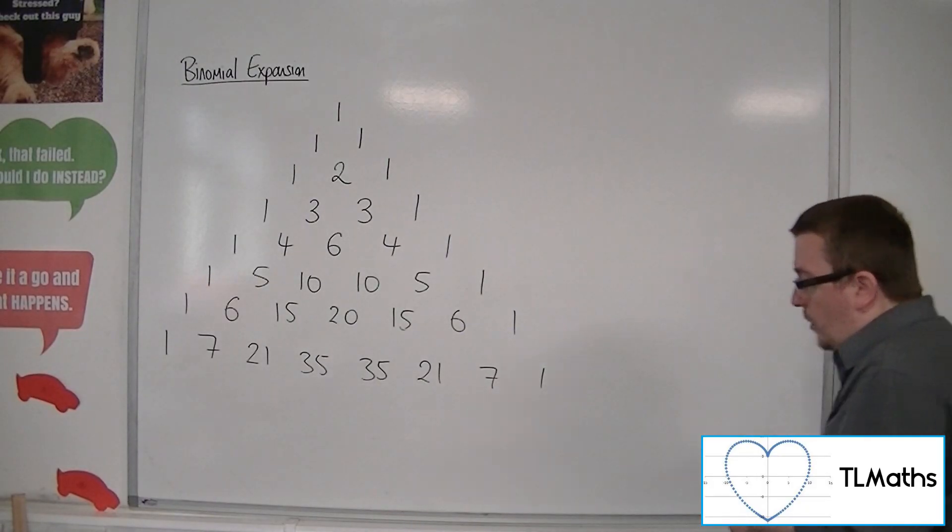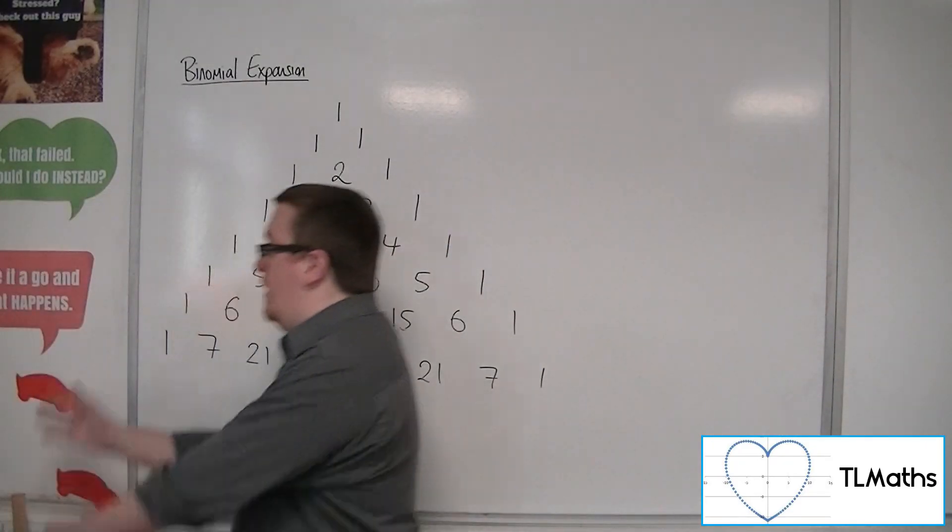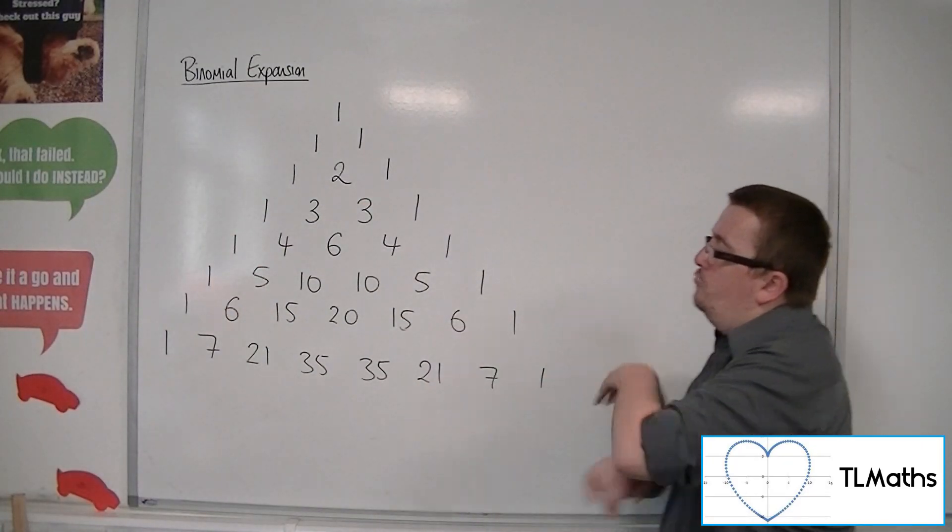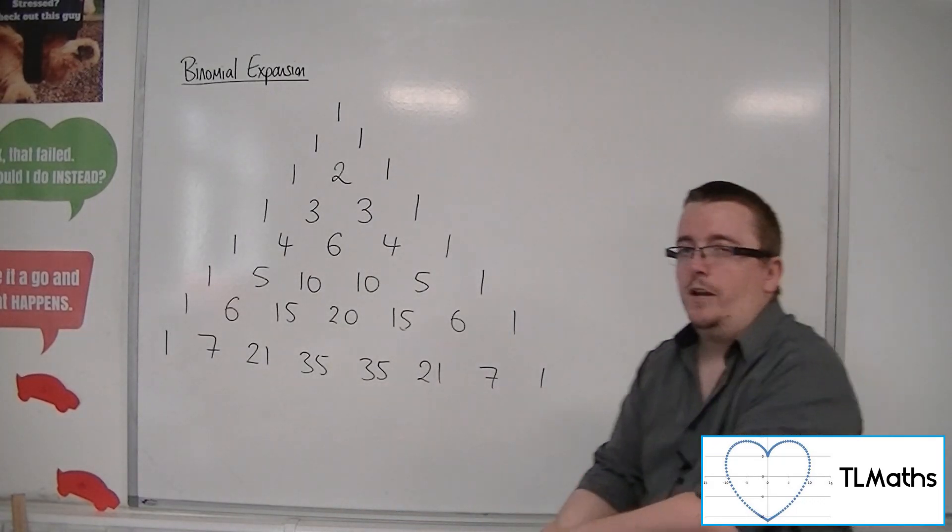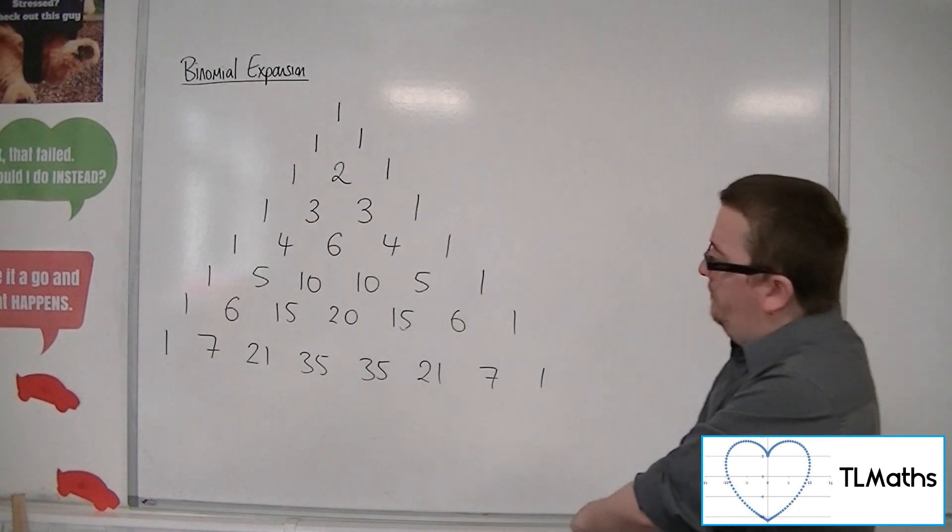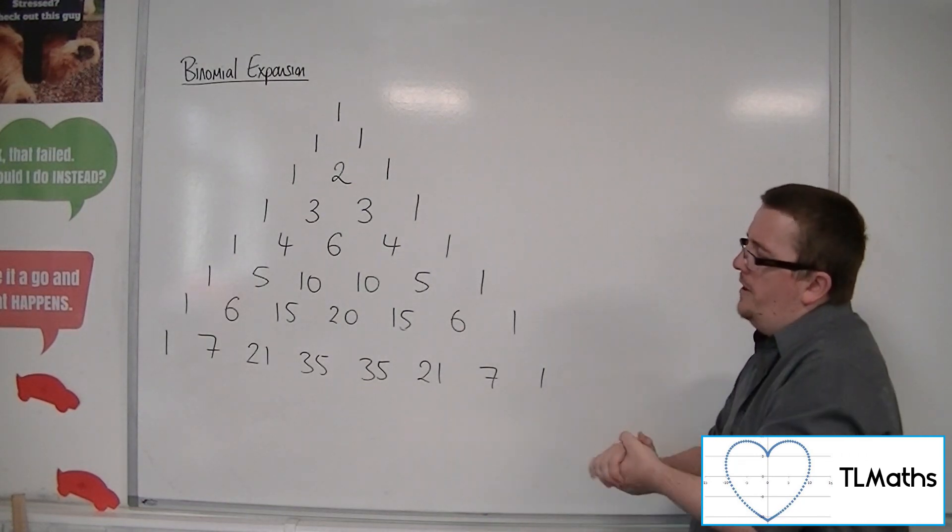So how can we find values in Pascal's triangle? What is this actually representing? It's representing something known as a binostat.